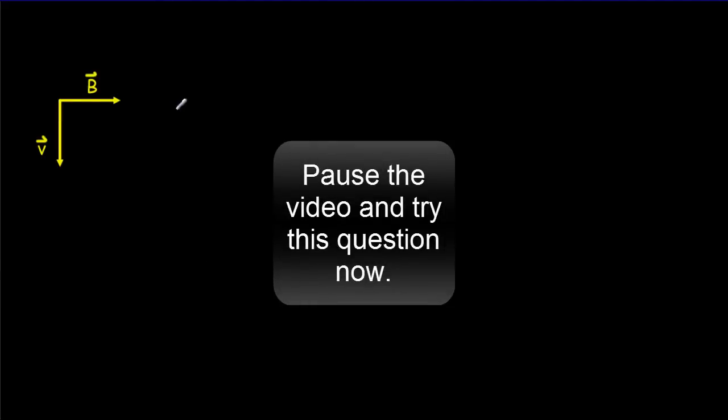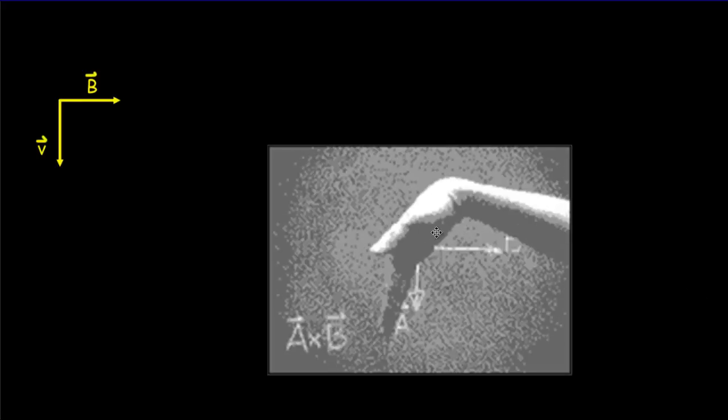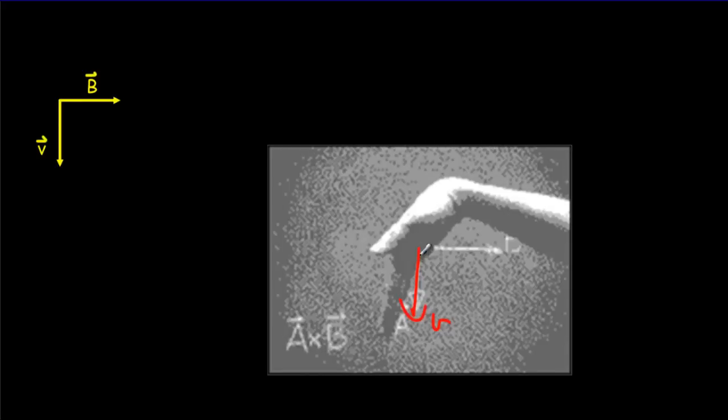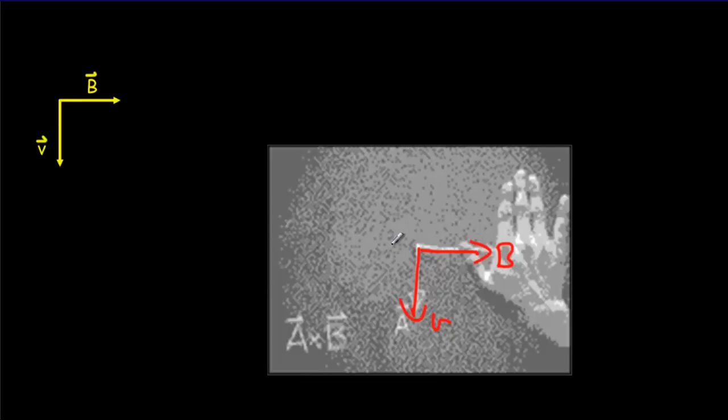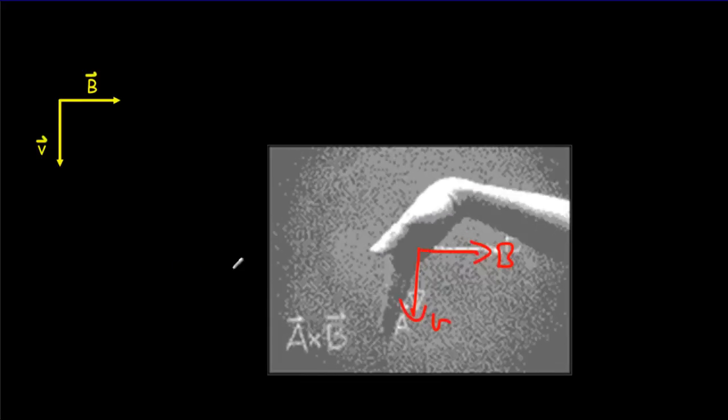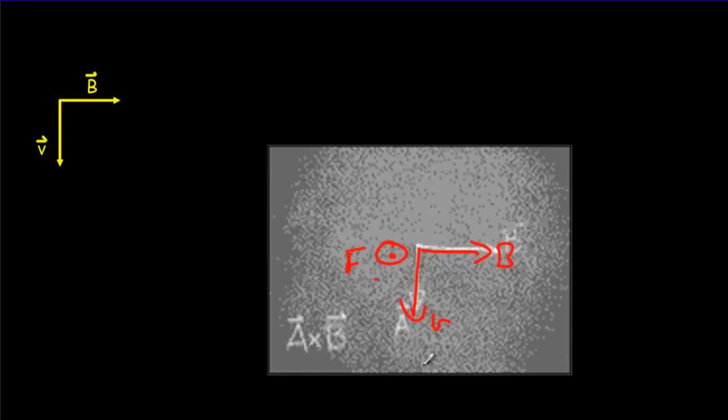Second example — once again, assume it's a positive charge, so use your right hand. The fingers are supposed to point down with the velocity, get the palm in the direction of the B field, and then your thumb is pointing out of the page, which is the direction of the force.